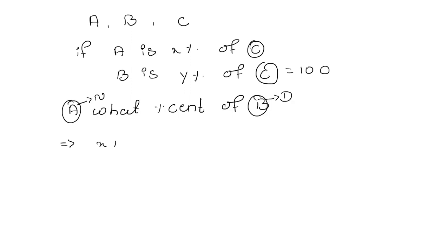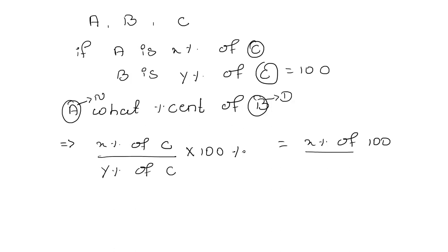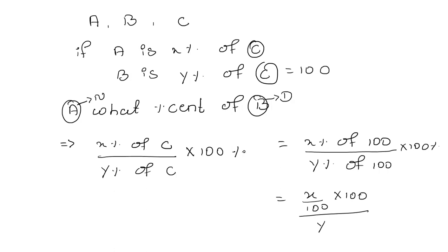In the numerator it is x percent of C, because A is x percent of C, and in the denominator it is y percent of C, because B is y percent of C, into 100% because the comparison is in the form of percentage. Now x percent of C is x percent of 100, since C equals 100, and y percent of C is y percent of 100. After cancelling the 100s, we get x upon y into 100 percent as the formula to find A is what percent of B.